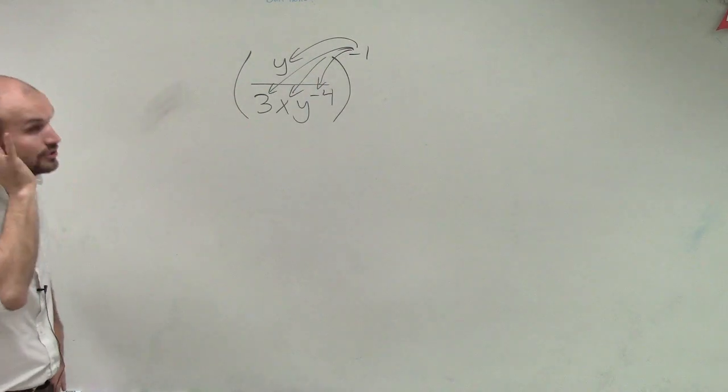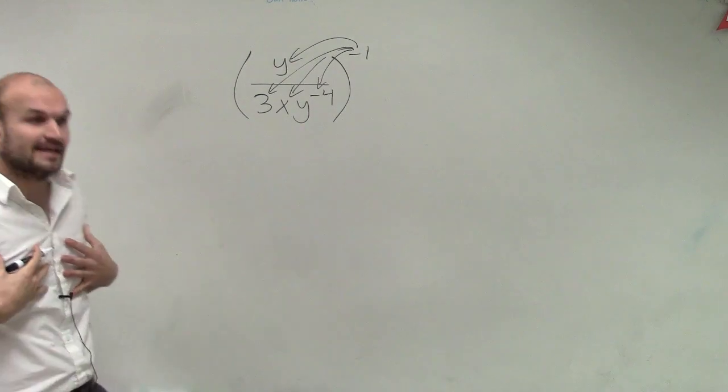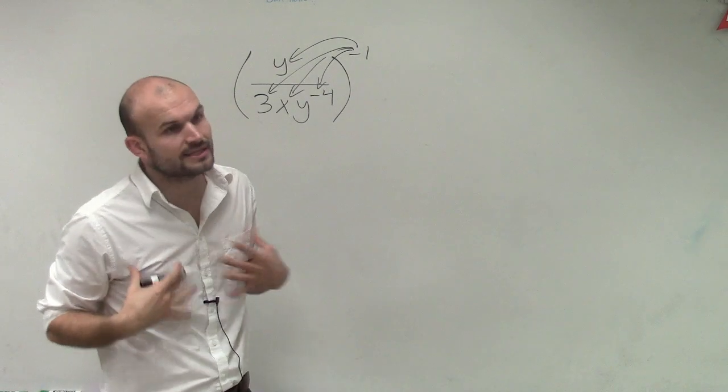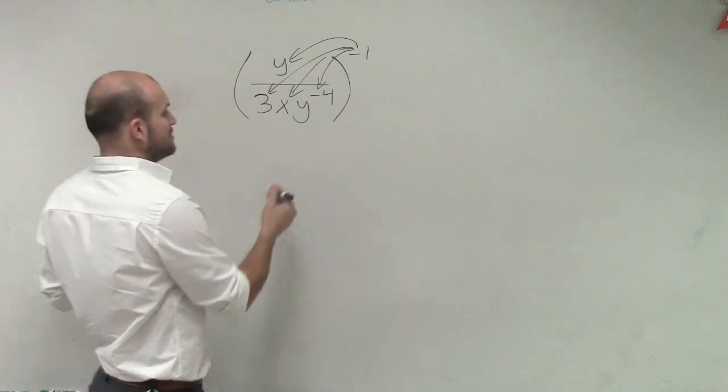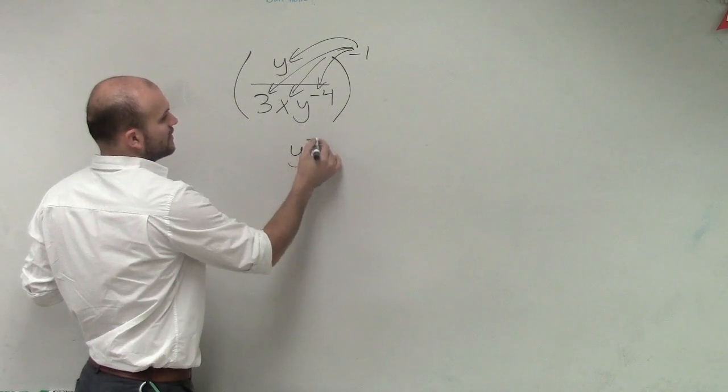I usually do the y's. You could do that. I'm just saying, for me personally, this has been the easiest way for me to do it. So I distributed the negative 1 to everything.